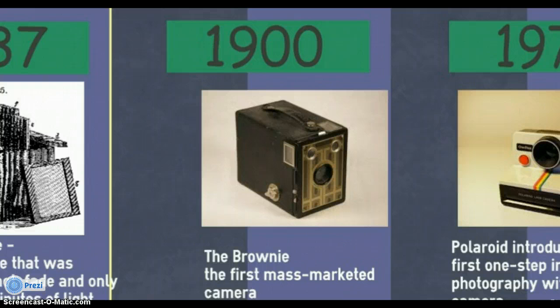That brings us to 1900. The Brownie hits the market and suddenly everyone can own a camera. The Brownie was sold for only a dollar, making owning a camera possible for every man.